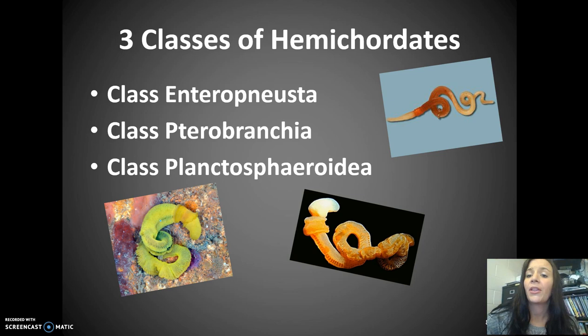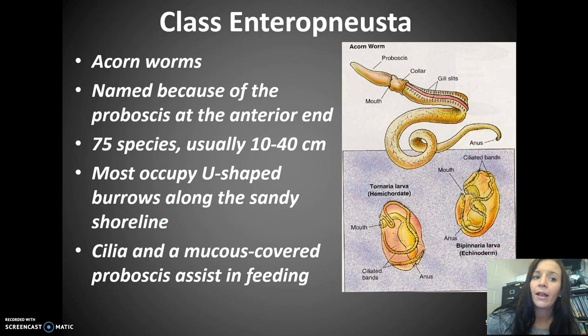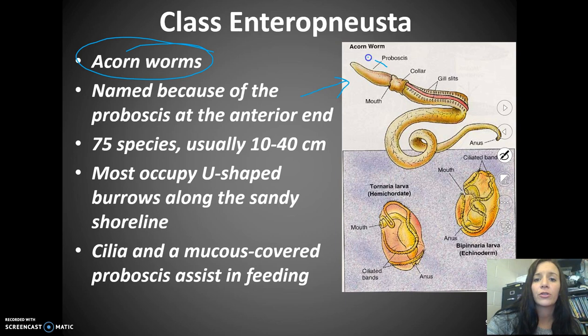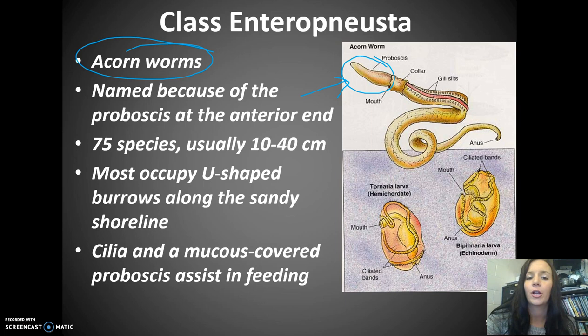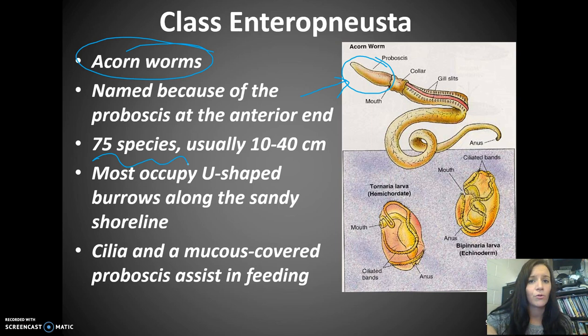The first of three hemichordate classes is class Enteropneusta — the acorn worms. They're named because they have a proboscis at the anterior end that is similar to an acorn in appearance. There are 75 species, usually 10 to 40 centimeters in length. Most live in U-shaped burrows on sandy shorelines, and that proboscis is also a great assistance in feeding.